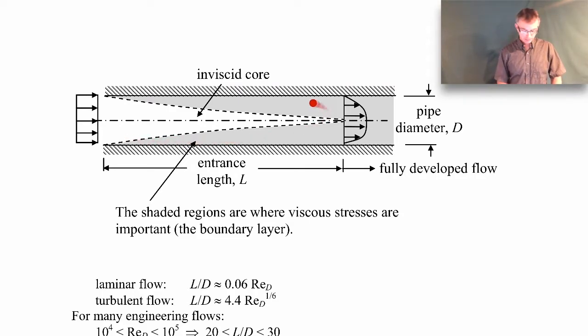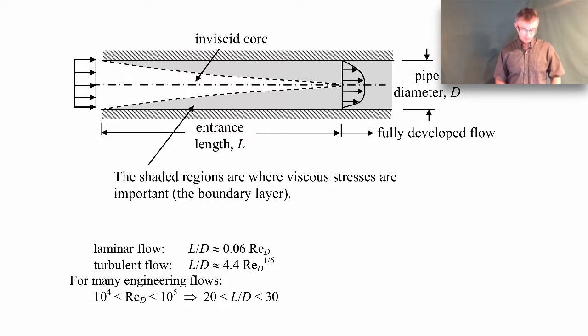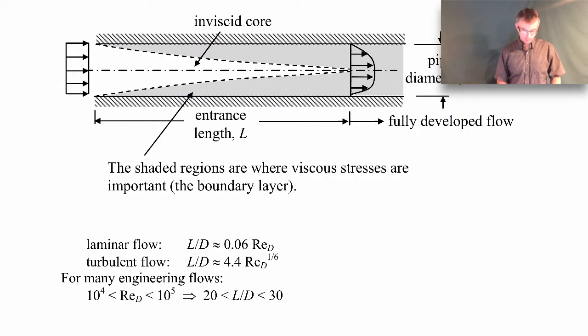This region where we're getting this kind of developing flow is called an entrance region. And people have made measurements of those entrance region lengths as a function of Reynolds number. And I give the correlations down here. So for a laminar flow coming into the pipe, the entrance region length made dimensionless by the pipe diameter is just like 0.06 times the Reynolds number based on the pipe diameter. And if it's a turbulent flow coming in, you have a different kind of relationship. It depends on the Reynolds number again, about raised to the 1.6 power. So for many engineering flows, I just kind of give a ballpark range of Reynolds numbers between 10,000 and 100,000. The entrance region length made dimensionless by the pipe diameter is between 20 and 30.